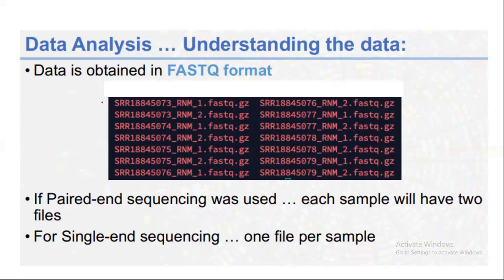Each sample consists of a single FASTQ file, and when it is compressed it is in .gz format. This is the sample name, followed by the paired-end read number, and then the FASTQ file with the .gz extension. In biological databases, which I'll discuss in future videos, these types of files are present. Files are also available in different formats which I will discuss in detail later. This is the SRR sample ID, followed by the FASTQ format and the .gz extension.